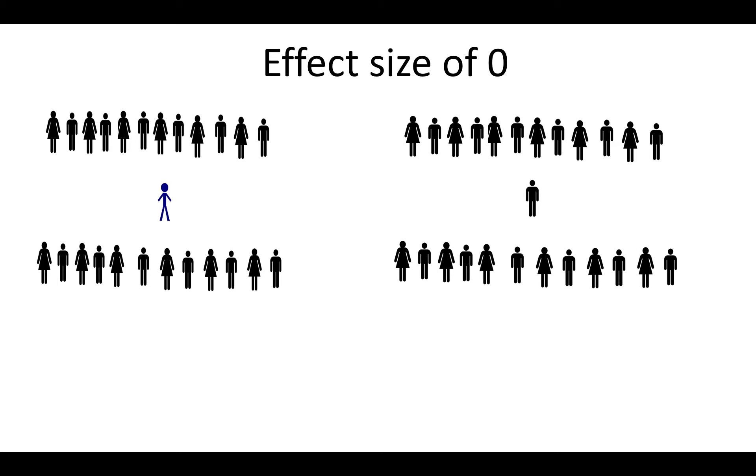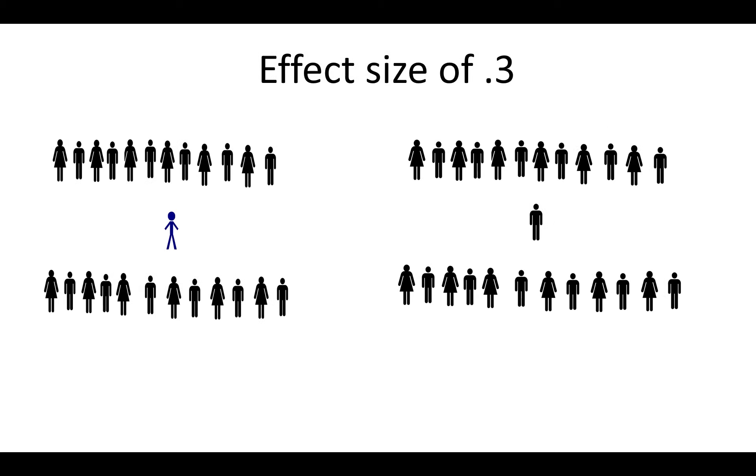For an effect of 0, if we took John out of his class and moved him to the class that did not receive the intervention, he would still be average, number 13. This means that nothing changed, the intervention had no effect.